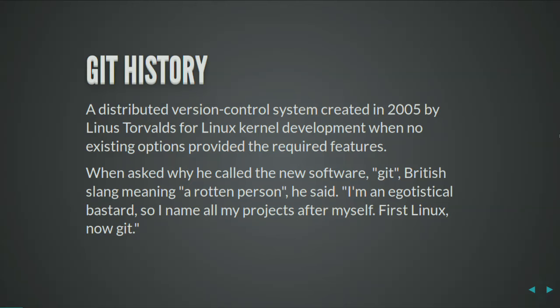The history of Git: Git is a distributed version control system created in 2005 by Linus Torvalds for Linux kernel development, when no existing options provided the required features. If you'd like to read the quote, that's where the name came from.